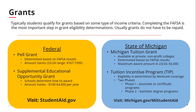While MTG is always dependent on the state's budget, we are anticipating an award of $3,000 for each eligible student for the 23-24 academic year. The state of Michigan also funds the Tuition Incentive Program, or TIP. Students gain TIP eligibility based on Medicaid eligibility. For more information on TIP, visit michigan.gov/mistudentaid. It is important to note that TIP eligible students must certify eligibility prior to their high school graduation.